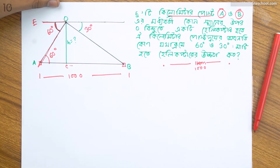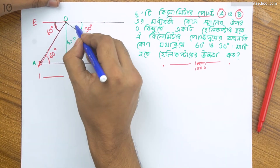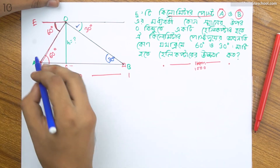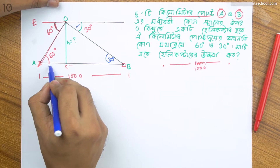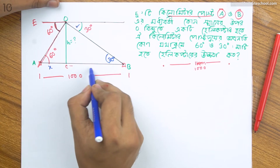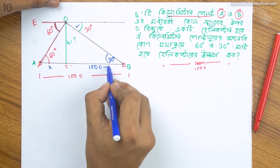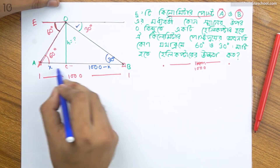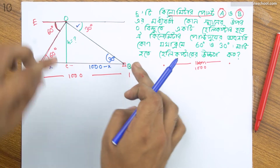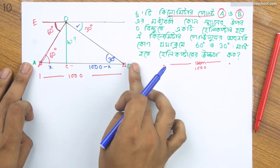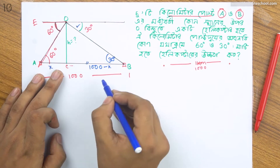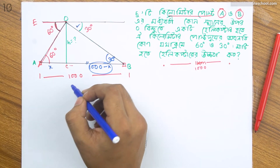60 ডিগ্রি এই আইডিয়াটা বারবার লাগে। তাহলে এটা 60 ডিগ্রি, এটা 30 ডিগ্রি হলে এটা 30 ডিগ্রি। এবার তুমি AC-এর মান ধরো x, আর BC সমান ধরো 1000-x। তুমি AC এবং BC দুটোই ধরো। 1000-x কীভাবে হলো? বোঝা যাচ্ছে - BC বলতে বোঝায় AB থেকে AC বাদ দিলে BC-এর মান 1000-x হয়।